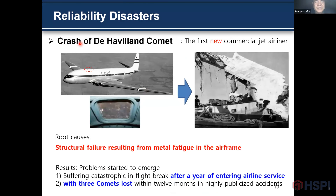This is a crash of a de Havilland Comet, the first commercial jet. It came from structural failure resulting from metal fatigue in the airplane. Problems started emerging as catastrophes occurred in flight after about a year in airline service, with a series of losses.